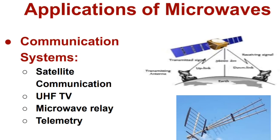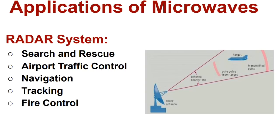Applications of microwaves are widely used in communication systems, especially in satellite communication — that is point-to-point communication from ground station to satellite — UHF TV transmission and reception, microwave relay, and telemetry transmission. In radar systems, microwaves are used especially for searching and rescuing, airport traffic control, navigation, tracking, and fire control systems.